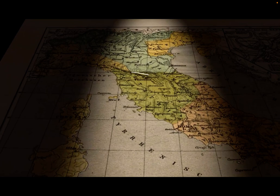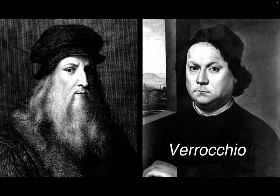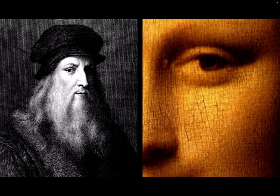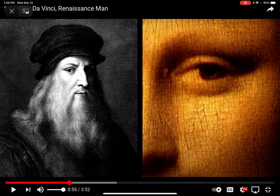Leonardo da Vinci was born an illegitimate child in the province of Vinci, Italy, on April 15th, 1452. At 15, he apprenticed under the famous painter Verrocchio in Florence, where he refined his skills and adapted his trademark sfumato, or smoky technique, which avoids harsh outlines.